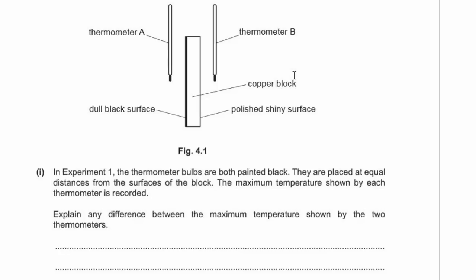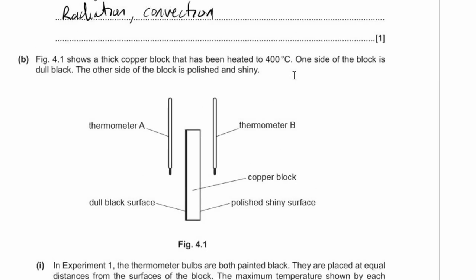The maximum temperature shown by each thermometer is recorded. We have a dull black surface and a shiny black surface. The dull black surface is much better at radiating energy, so the thermometer on that side receives a lot more energy from the block and will get warmer.